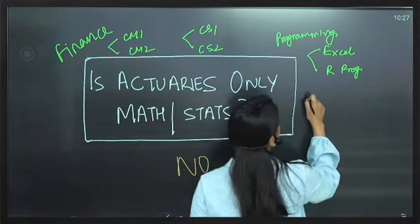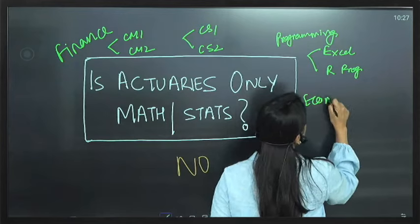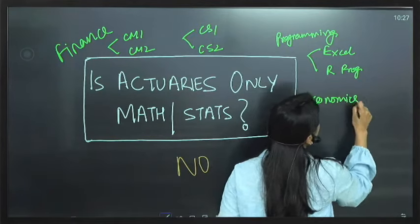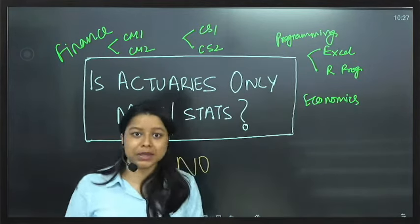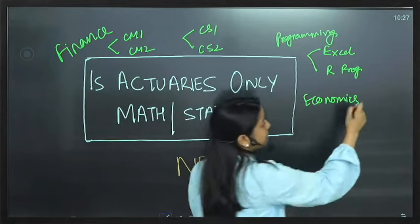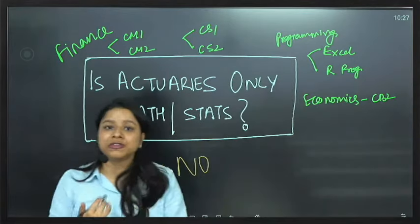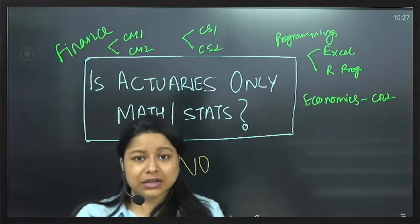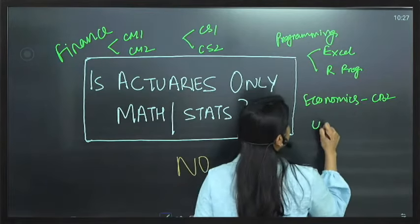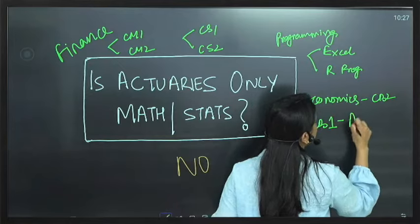We are also going to learn about economics. We will be learning about macro and microeconomics in detail in paper CB2. You will be again learning about finance, tax, and basic accounts in paper CB1.